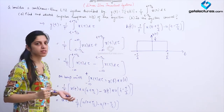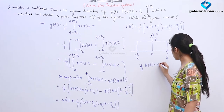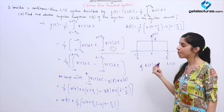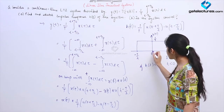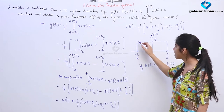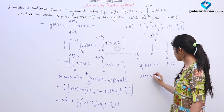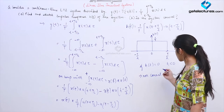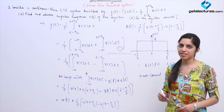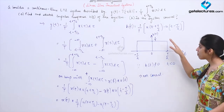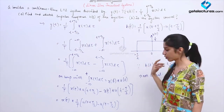Now checking causality: if h(t) = 0 for all t < 0 the system is causal. But looking at the graph, h(t) is not zero for t less than 0 — there are defined values of h(t) for time instances less than 0. Therefore the system is non-causal, since h(t) ≠ 0 for t < 0. This shows how by only looking at the impulse response we can comment on causality, stability, memory, and so on.